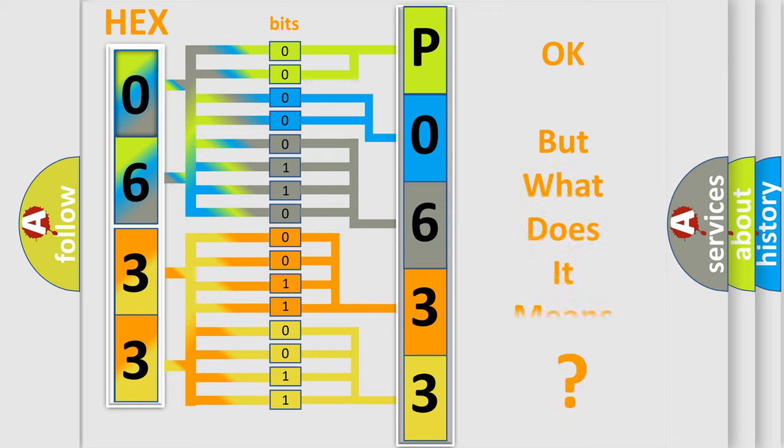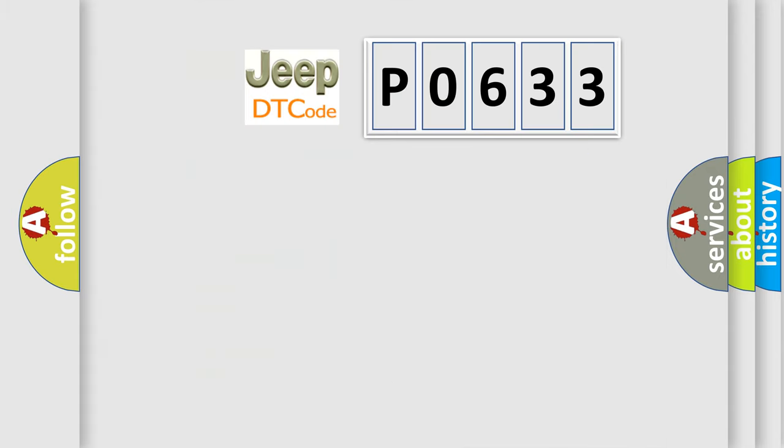The number itself does not make sense to us if we cannot assign information about it to what it actually expresses. So, what does the diagnostic trouble code P0633 interpret specifically for Jeep car manufacturers?